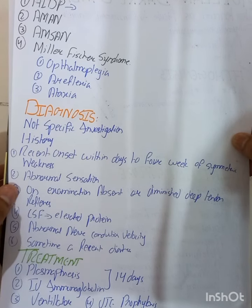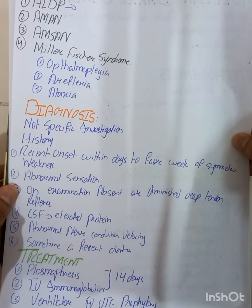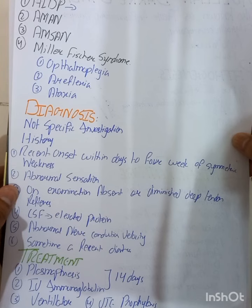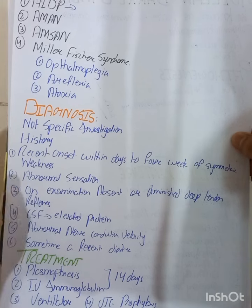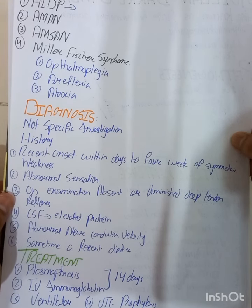The treatment of Guillain-Barré syndrome is plasmapheresis and IV immunoglobulin (IVIg), given within 14 days of disease onset. These treatments remove the antibodies that are damaging the neurons, myelin sheath, and axons. When antibody load is reduced, the neurons can regenerate, resulting in good prognosis — about 80% of patients have a good prognosis. Respiratory weakness is an emergency requiring ICU and ventilator support.